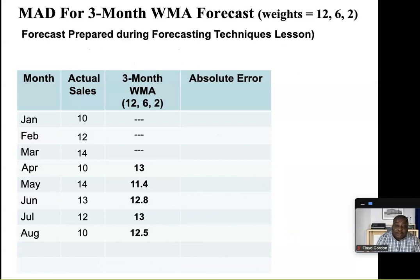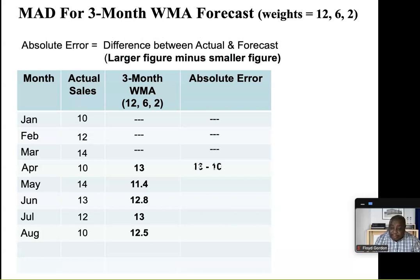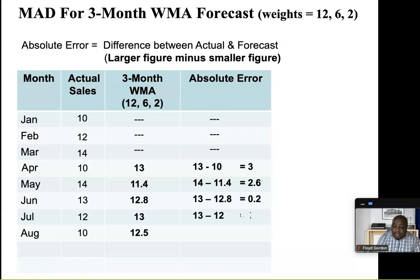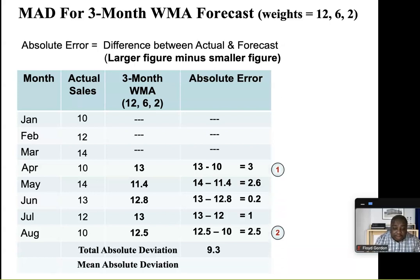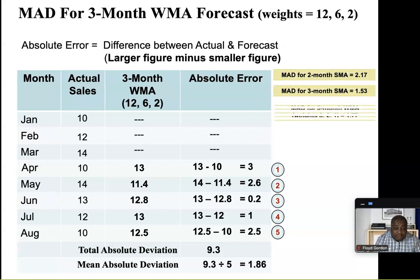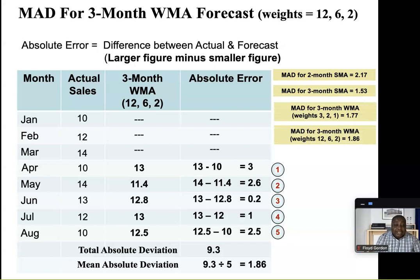Now the three-month weighted moving average with weights 12, 6, 2. For April: 13 minus 10 = 3. For May: 14 minus 11.4 = 2.6. For June: 0.2. For July: 1. And for August: 2.5. This gives us a total deviation of 9.3. Since this represents 5 numbers, we divide 9.3 by 5 to get 1.86. So summing up so far: 2.17, 1.53, 1.77, 1.86 — the three-month simple moving average is still the most accurate of these four. But we have two more to go.